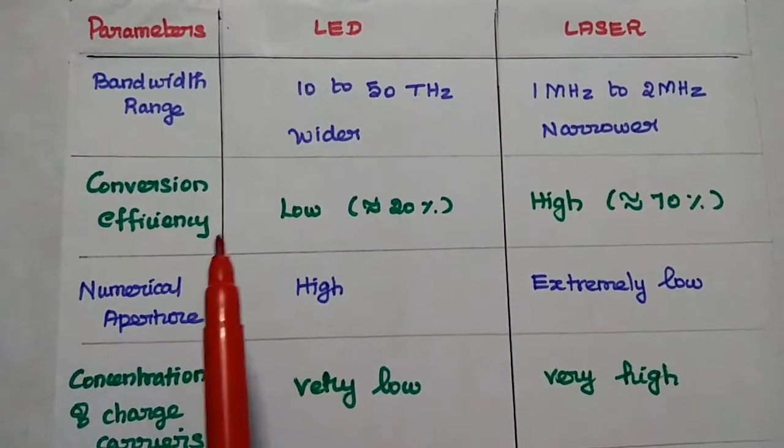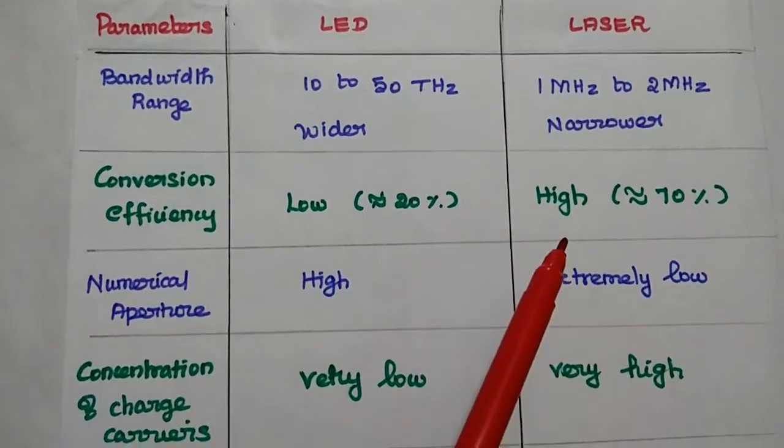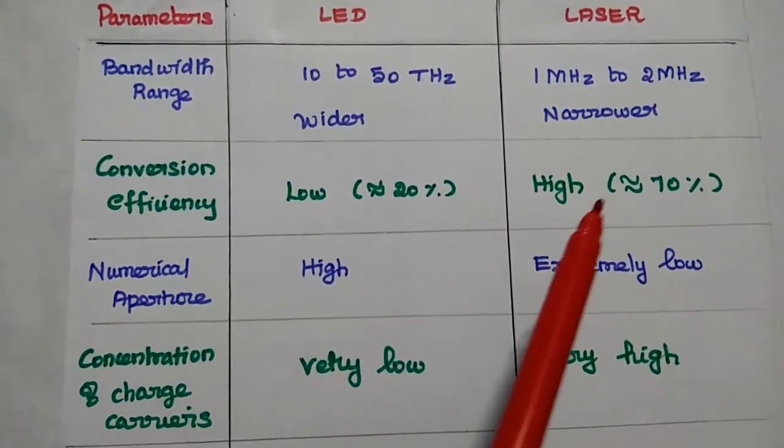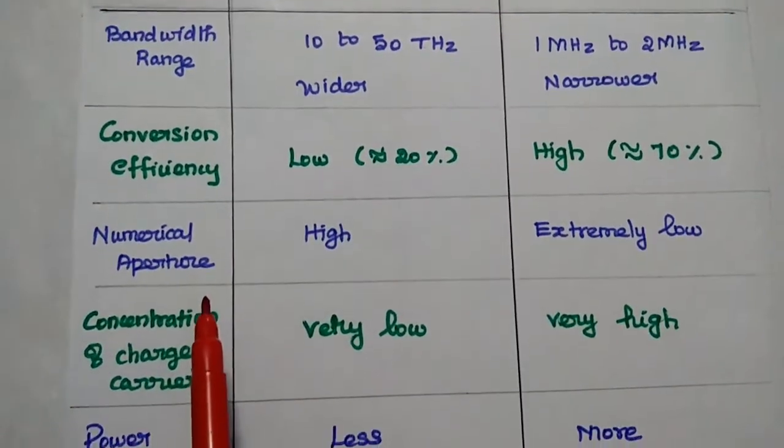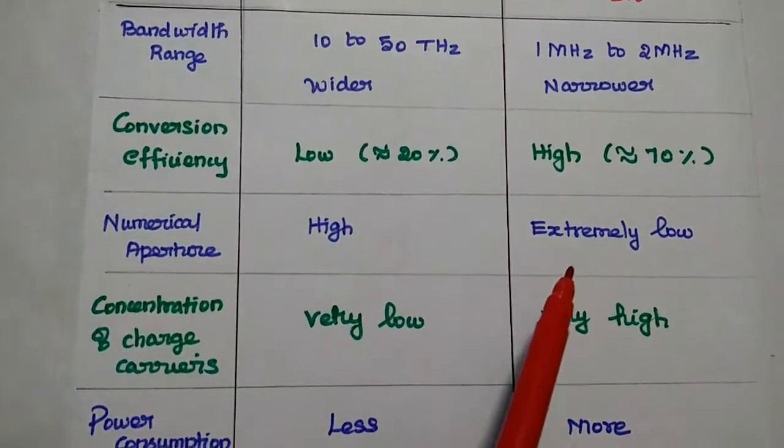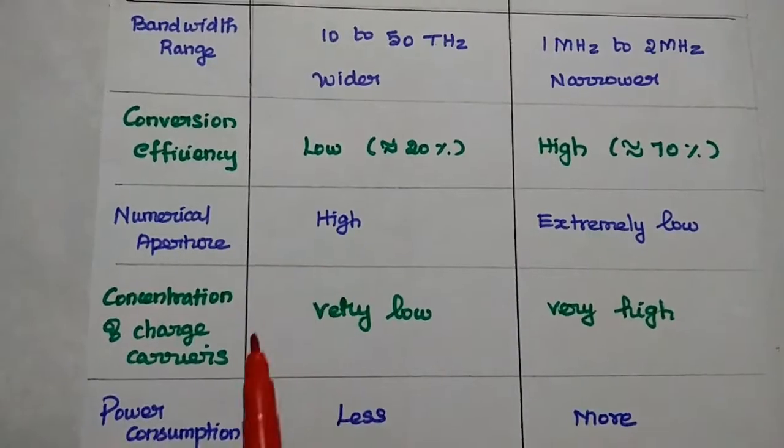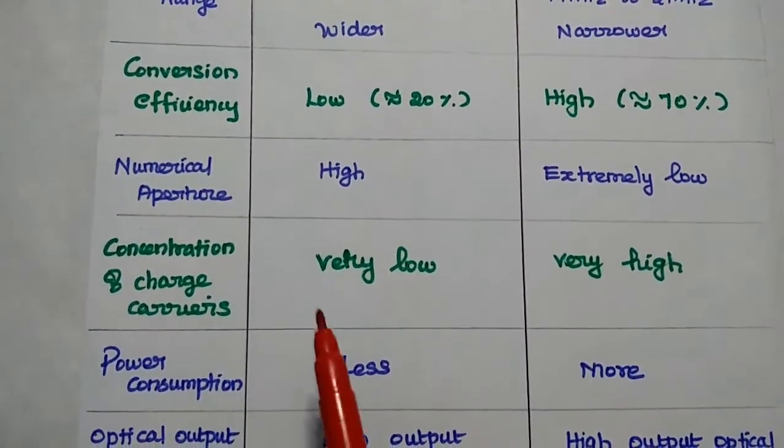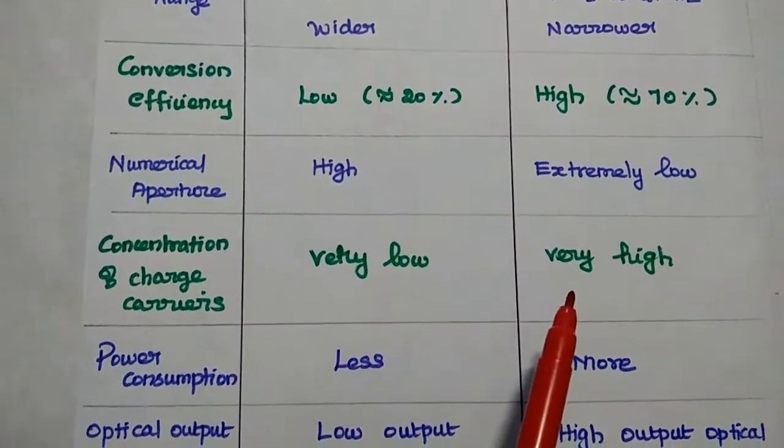The conversion efficiency is very low for LED, around 20%. For laser, its efficiency is very high, around 70%. The numerical aperture value is high for LED and extremely low for laser, that is spreading of the light. Concentration of charge carriers is very low in LED, but very high in laser.